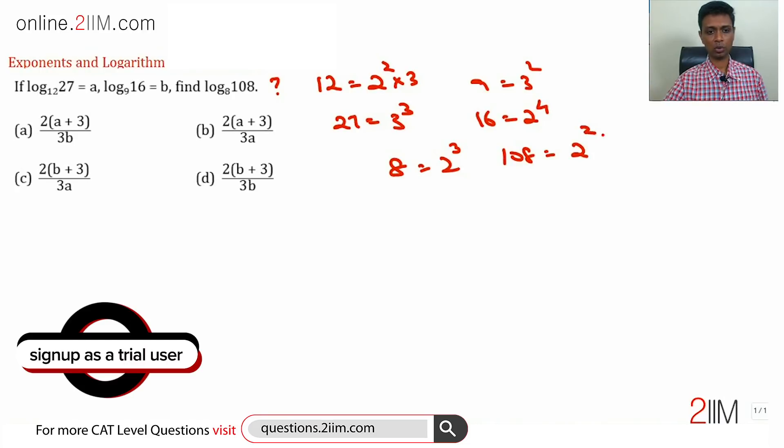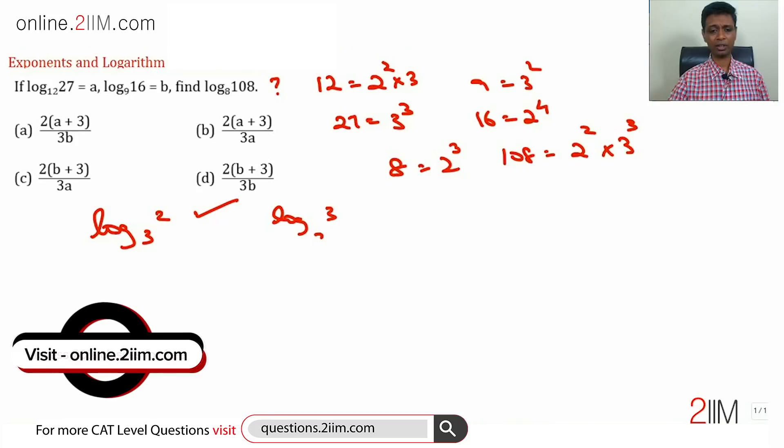108 is 2 squared times 3 cubed, completely dealing in powers of 2 and 3. So straight away we can sense that if you know log 2 to the base 3 or log 3 to the base 2, this is just a reciprocal of that, then we are through.